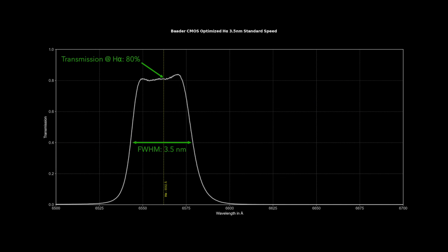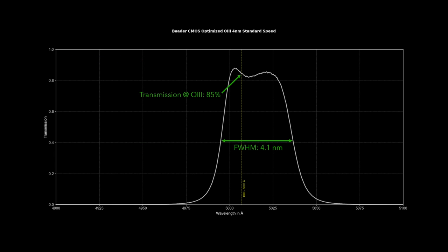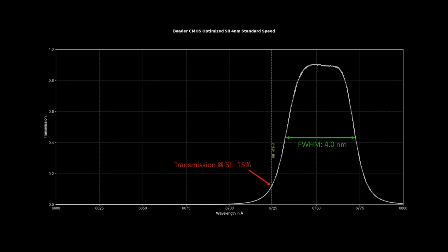Next, we're looking at Baader's so-called CMOS-optimized set of narrowband filters. The H-Alpha and O3 filters are pretty much exactly to spec, but the S2 filter had very low transmission at that precise wavelength. This filter was owned by a different person, who always wondered why he was getting so little signal in his S2 subframes, and simply assumed that the targets that he was imaging in SHO just emitted very little in S2.